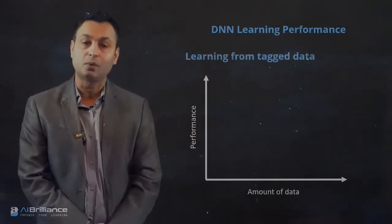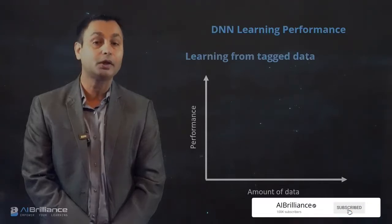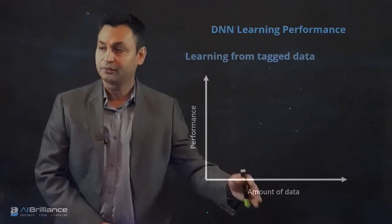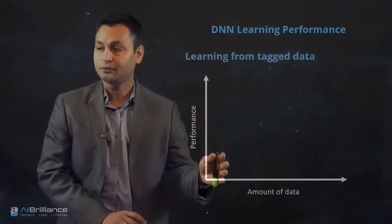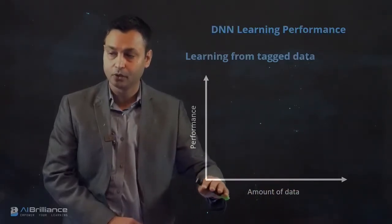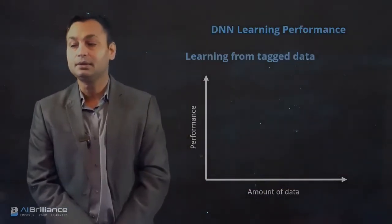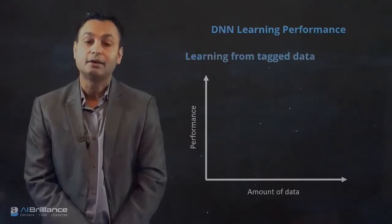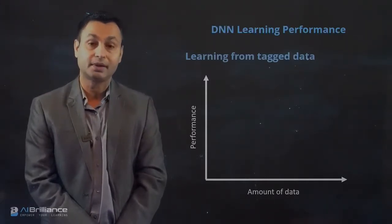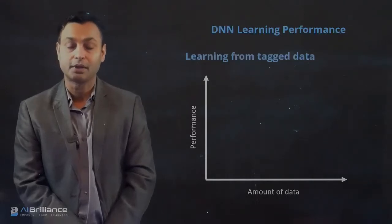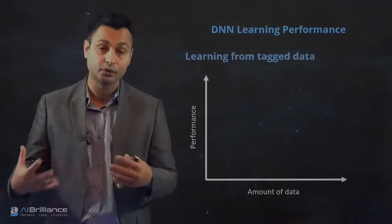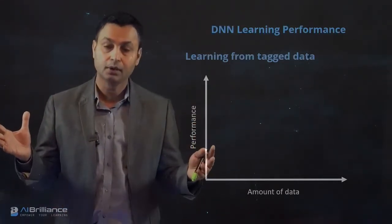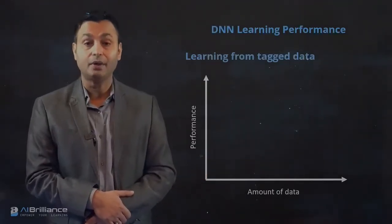Let's talk about deep learning performance — what has made deep learning so popular, or what has made artificial neural networks in the current age so popular. Here is a plot where we are plotting the performance of an algorithm against the amount of data. Over the last 15 to 20 years, we have gained the ability to capture a lot of data — for example, with the explosion of social networking websites, people have started taking images and videos, and now we have a treasure trove of very high volume data.